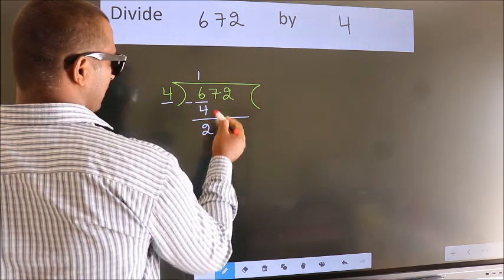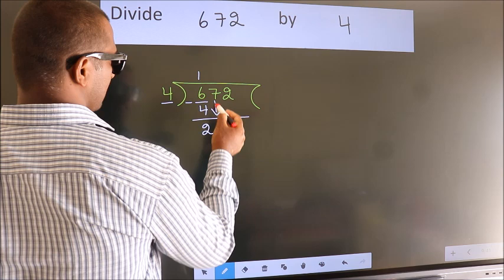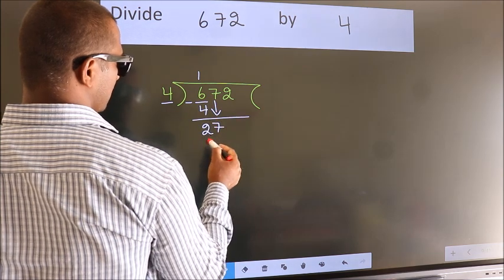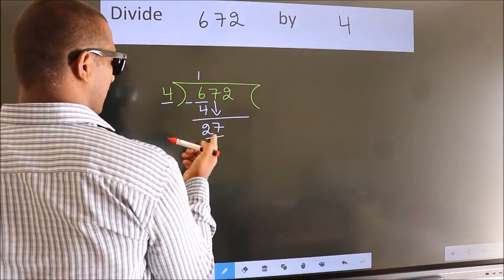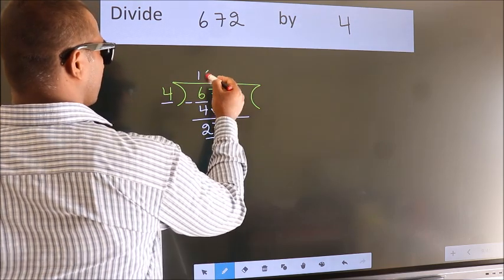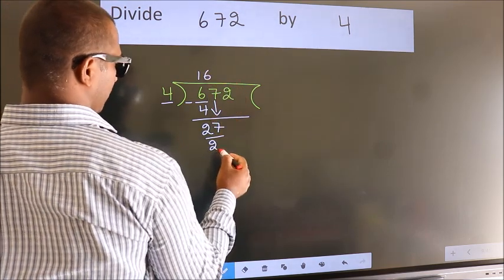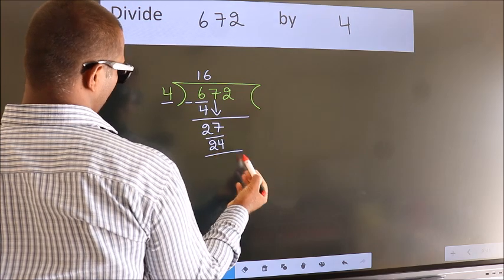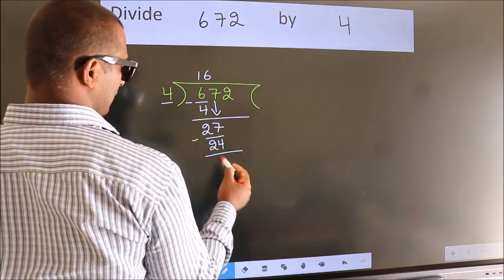After this, bring down the beside number. So, 7 down. So, 27. A number close to 27 in 4 table is 4, 6, 24. Now, we subtract. We get 3.